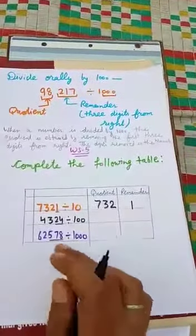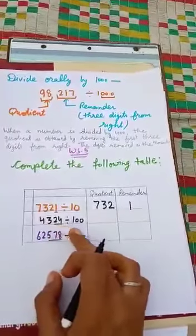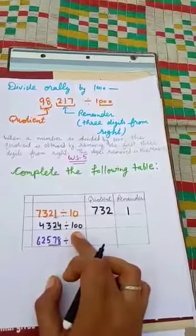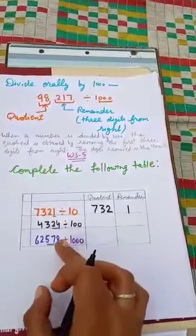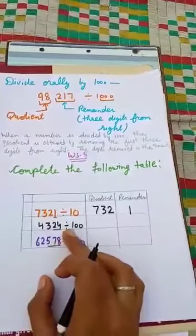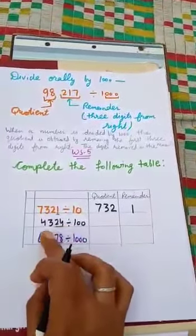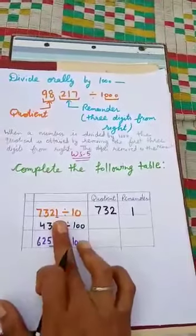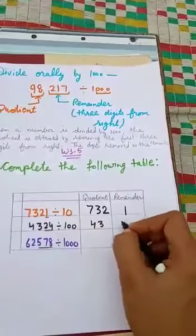Now come to the next part: 4,324 divided by 100. When a number is divided by 100, the quotient is obtained by removing the first two digits from the right and the digits removed are the remainder. When we divide 4,324 by 100, we get 43 as quotient and 24 as remainder.